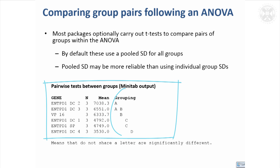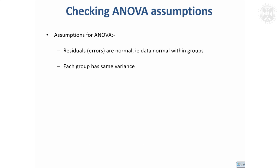Packages handle post-hoc comparisons in different ways. Minitab has a neat way of showing which groups are statistically significantly different by giving each a letter. If two groups do not share a letter, they are statistically significantly different. For example, if the first group has letter A and the second gene has A and B, they share the letter A so they're not different. But the first group and the third group don't share a letter — one has A, the other B — so they are significantly different from each other.